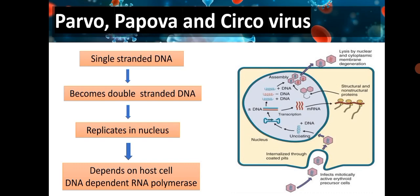In parvo, papova, and circovirus, the single-stranded DNA genome becomes double-stranded DNA, replicates in the nucleus, and depends on the host cell DNA-dependent RNA polymerase.